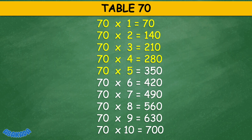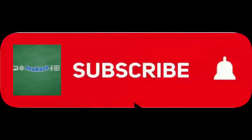Table 70: 70 times 6 equals 420, 70 times 7 equals 490, 70 times 8 equals 560, 70 times 9 equals 630, 70 times 10 equals 700. Thank you for watching.